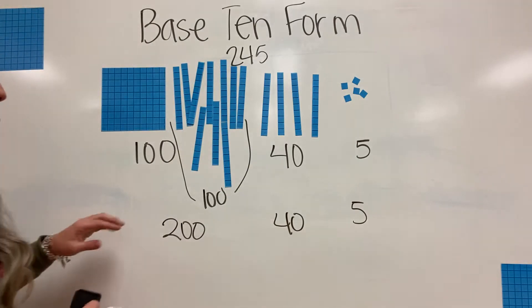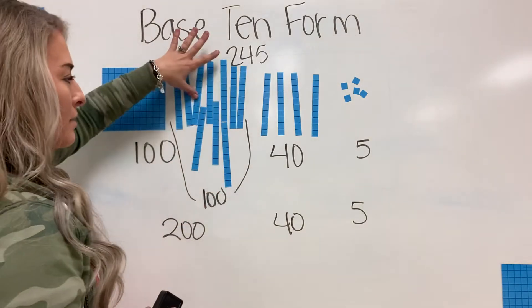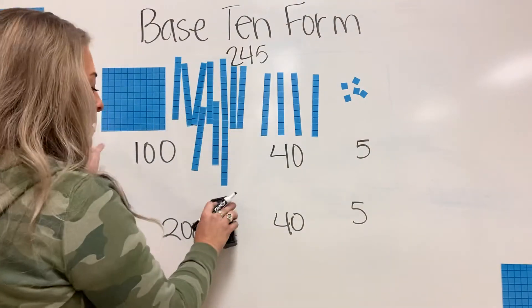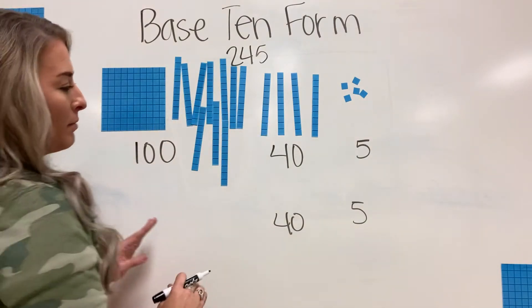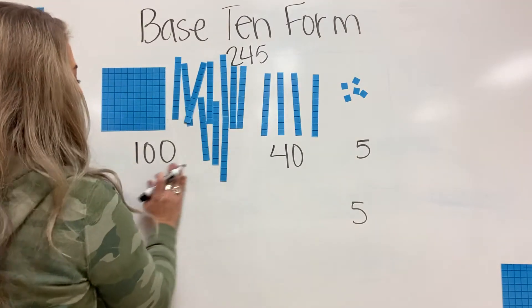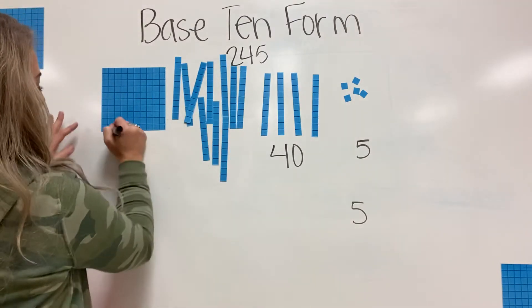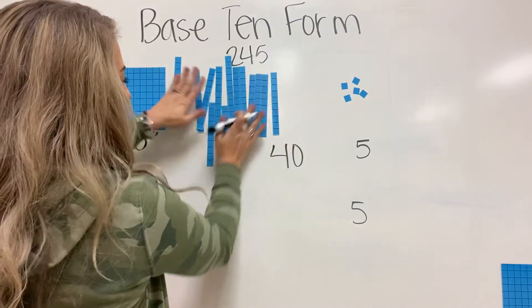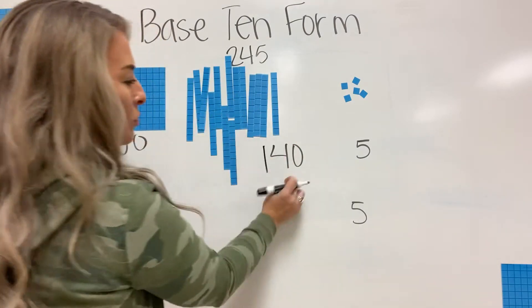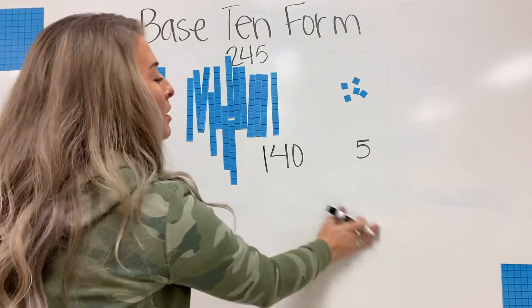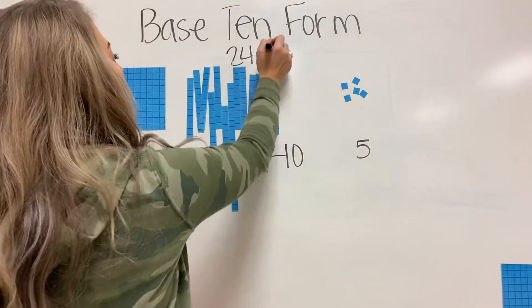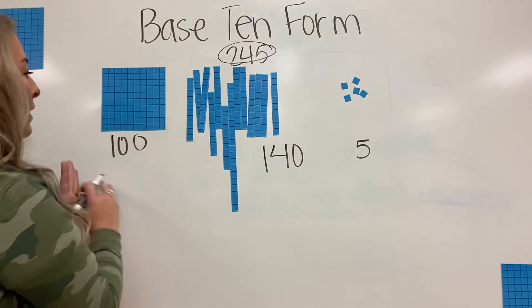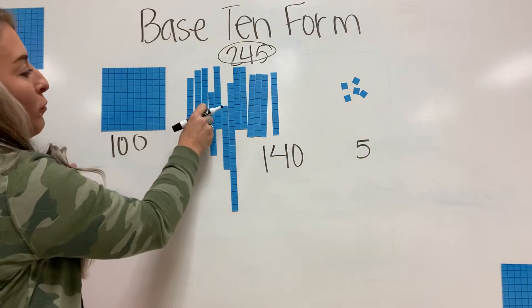But ideally what you want to do is you don't want to leave this as a hundred. Even though it is a hundred, you'll see it on exams written like this: you have 100, this is a hundred, this was a hundred and this was 40. So together you have 140 tens and five ones. You still have the value of 245, but it's just shown in a different way, but it's still 245.